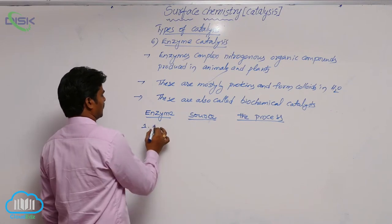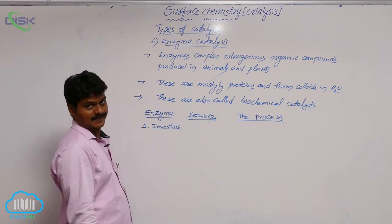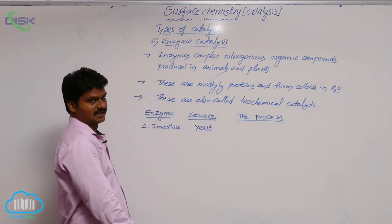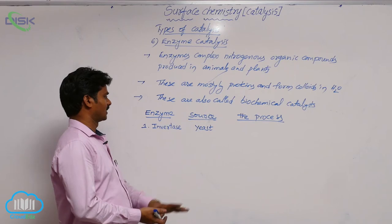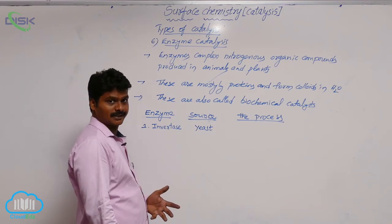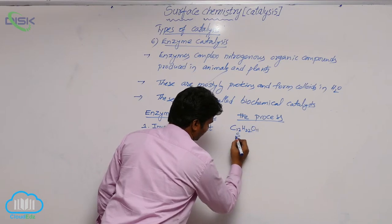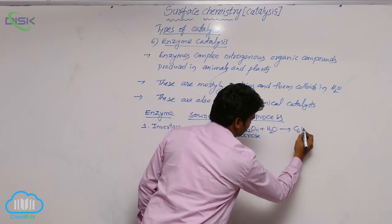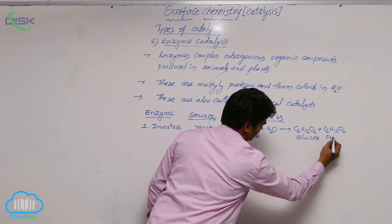Invertase converts sucrose into glucose and fructose. The reaction is: C12H22O11 (sucrose) + H2O → C6H12O6 (glucose) + C6H12O6 (fructose). This is a biological process catalyzed by invertase.